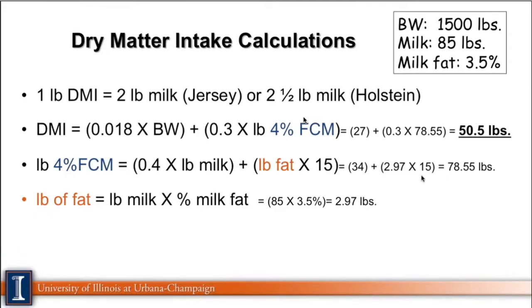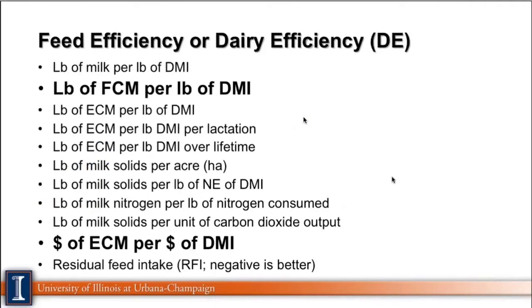So you can have an idea of what your cows are eating and what they're supposed to be eating, and of course that's always checked against what's actually happening at your farm. To measure efficiency, you take the input — how much the cows are eating — and the output, like milk production. I'm highlighting the two most commonly used measurements, but remember there are many bullet points covering different ways to measure efficiency in cows.